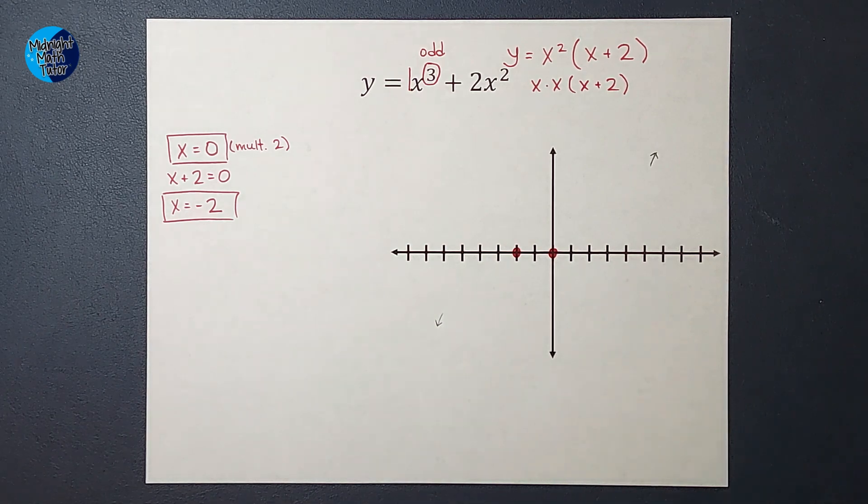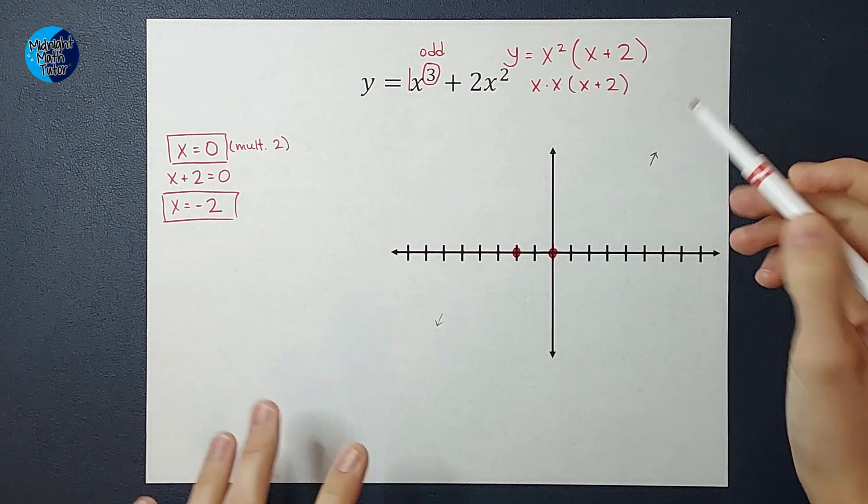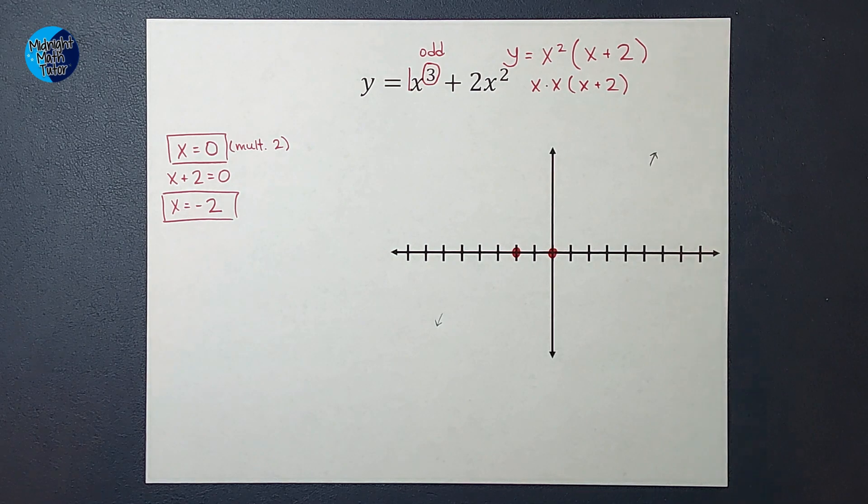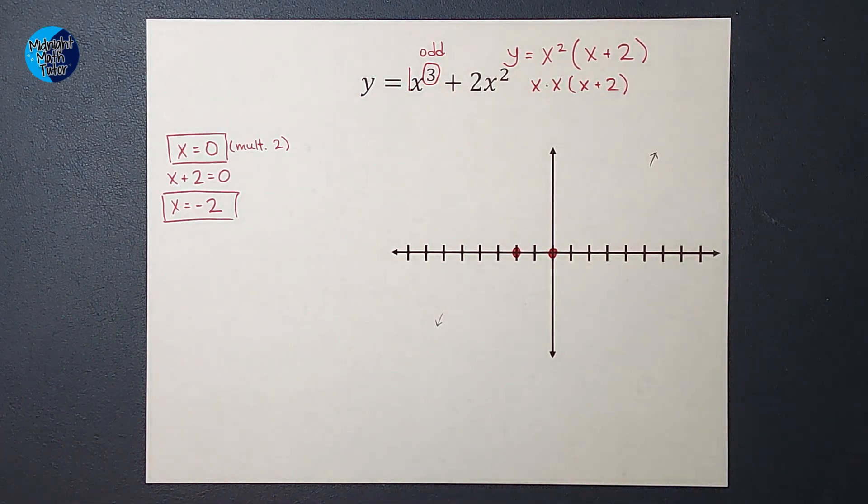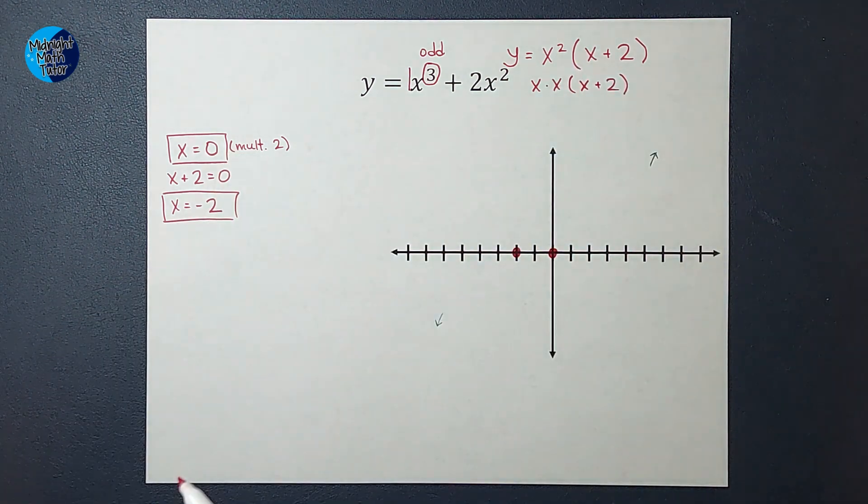If I have an odd multiplicity... What's the best way to describe this? So I had two x's, right? So it had a multiplicity of two. I only had one x plus two, so it has a multiplicity of one.